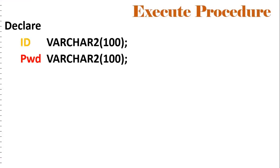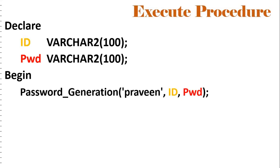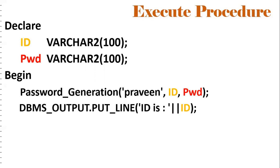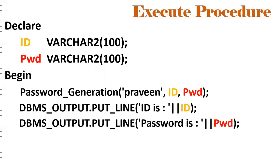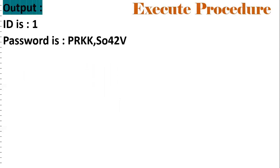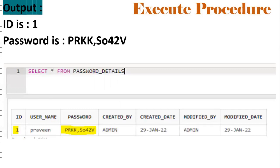Now we need to execute this procedure using an anonymous block. The procedure password_generation has one input parameter — 'Praveen' — and two output parameters: ID and password. We declare local variables to store the output, then call the procedure and use DBMS_OUTPUT.PUT_LINE to display results. The output would be: ID is 1, and the password starts with 'PR' (first two characters of 'Praveen' in uppercase), followed by 8 random characters generated by DBMS_RANDOM. Selecting from password_details confirms the entry has been made.